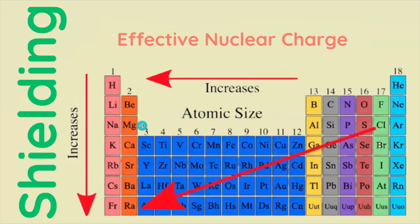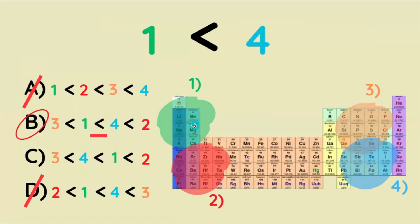So it just so happens that shielding is more powerful in its effect on atomic radius as compared to ENC. Therefore, the top left region generally has smaller atomic radii than the bottom right.